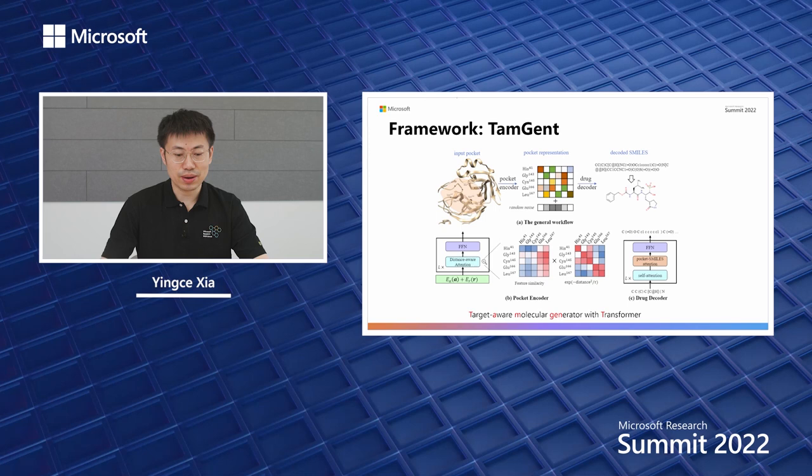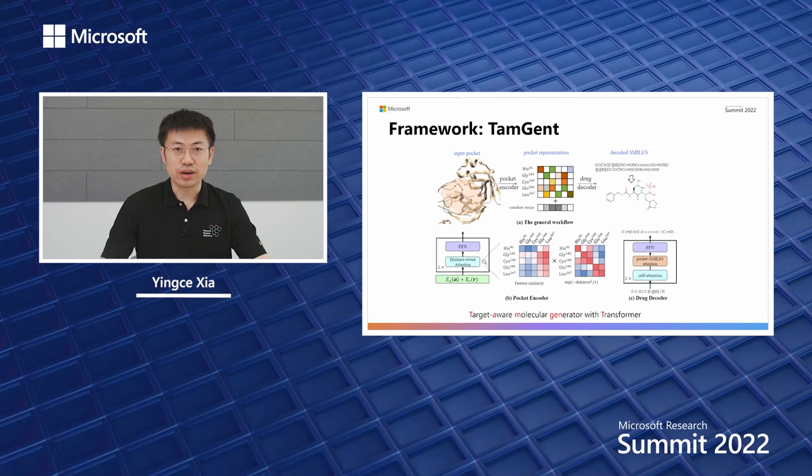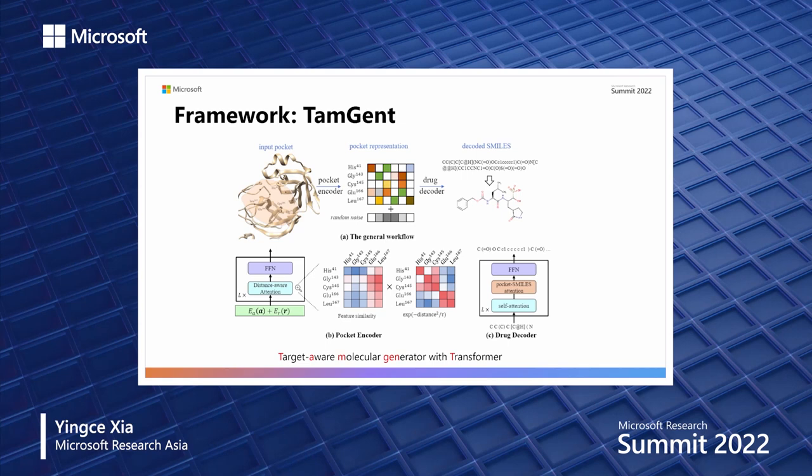In the encoder, we design a distance-aware attention that can capture the geometric information of the amino acids. The decoder is pre-trained on 10 million compounds from PubChem, and you can regard it as a SMILES GPT, which is similar to GPT in natural language processing.